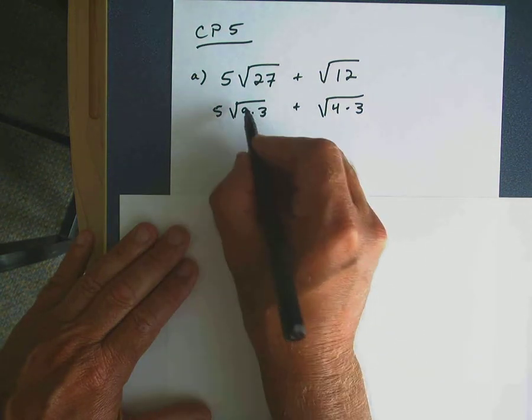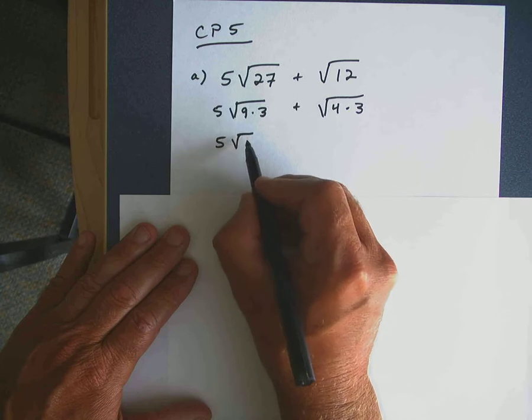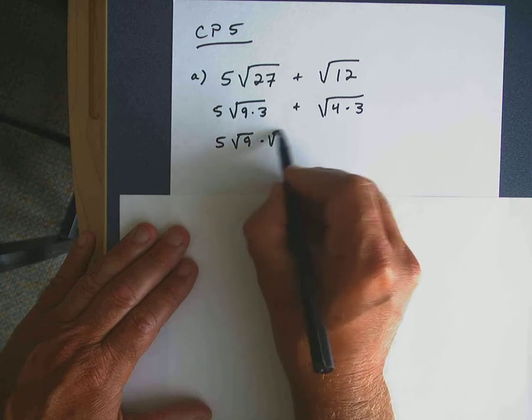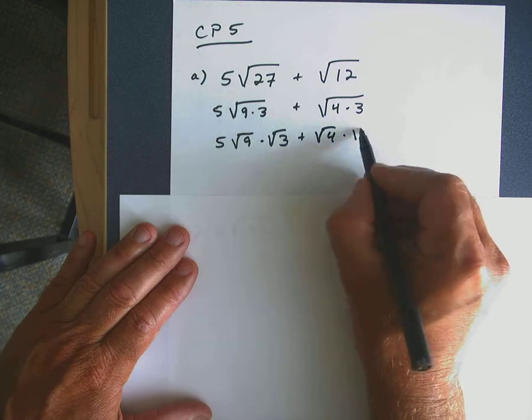Okay, and then I'll rewrite it, splitting this up. 5 times the square root of 9 times the square root of 3, plus the square root of 4 times the square root of 3.